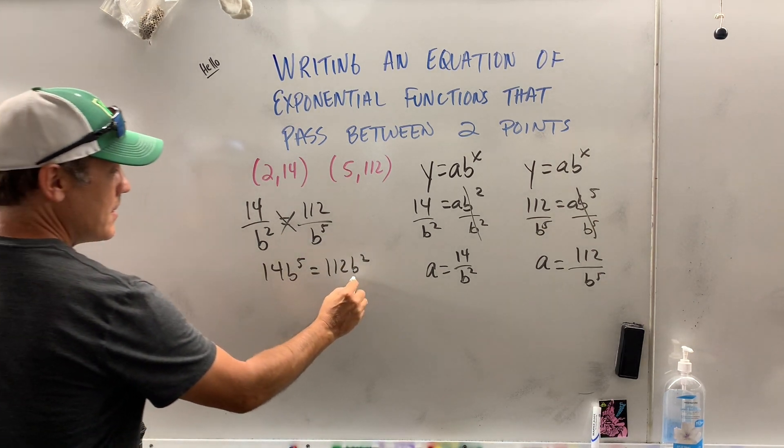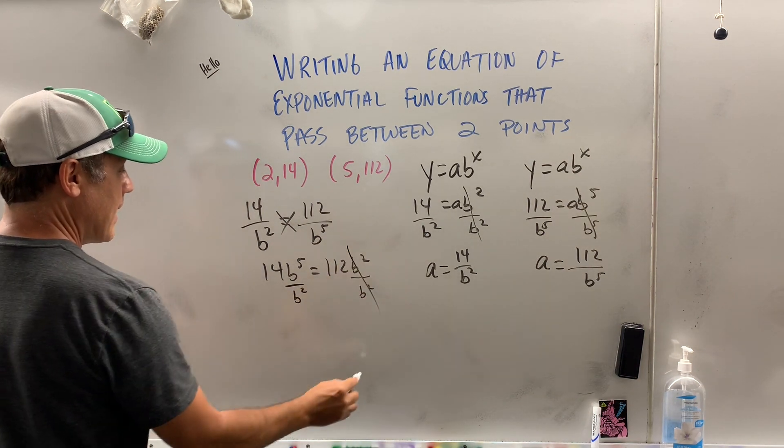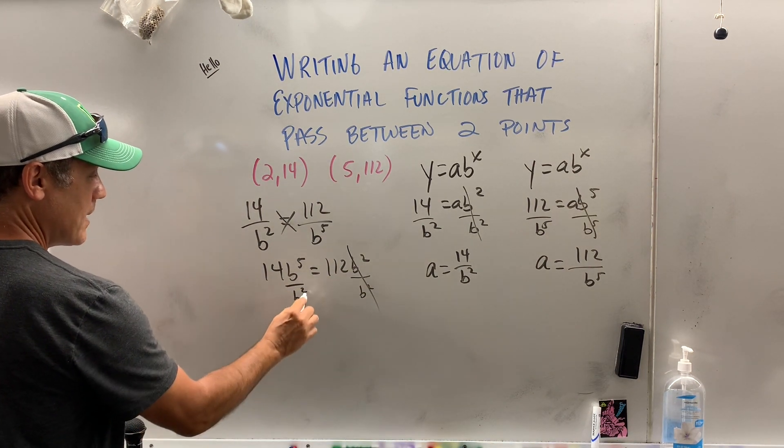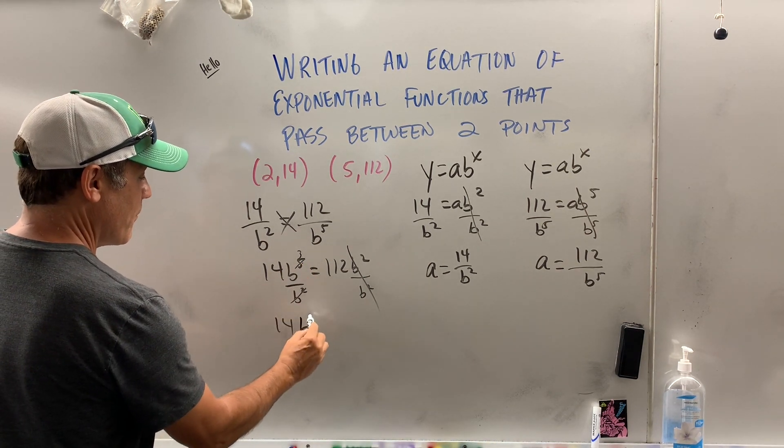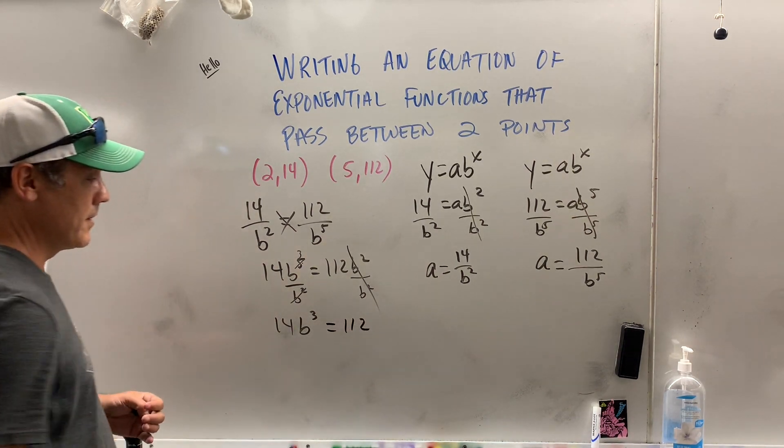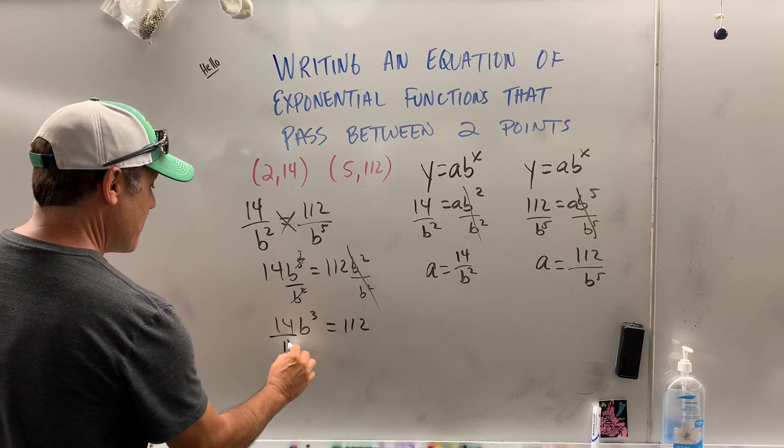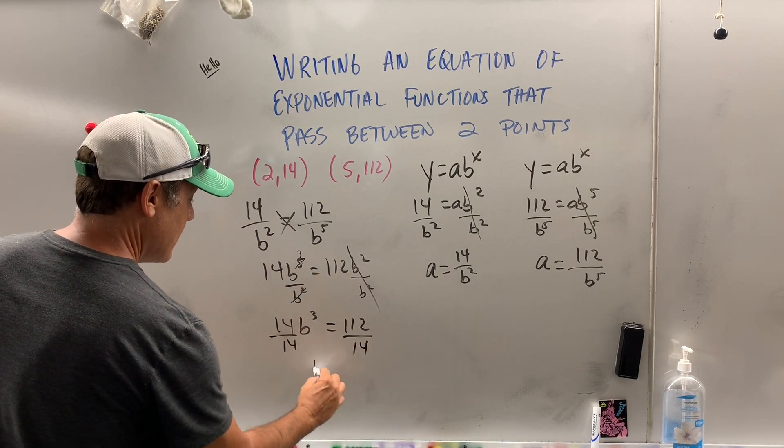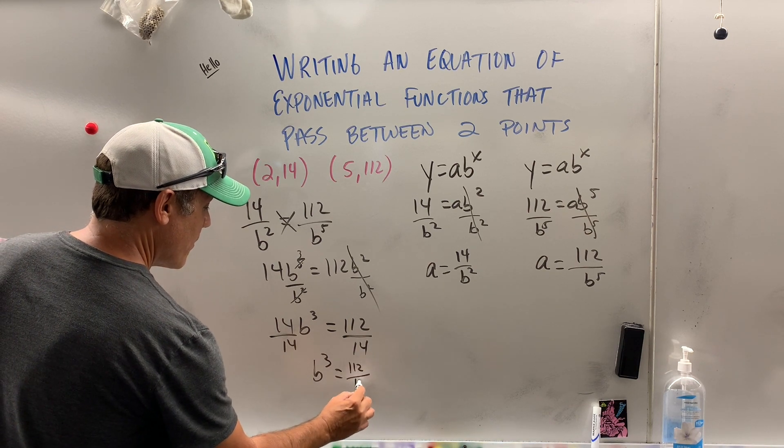Now, I could divide b squared on both sides and watch what's going to happen. That's going to cancel and I'm left with 14. I get rid of both of those, take two out of here and I'm left with three. So I'm left with 14b cubed equals 112. Well, I've got to solve for b, so the first thing I've got to do is divide by 14. Now, we have b cubed equals 112 over 14.